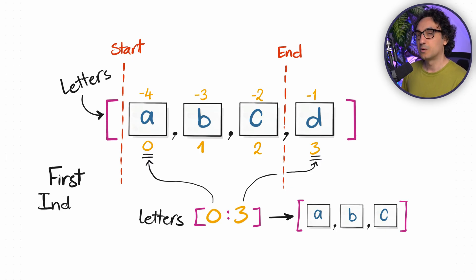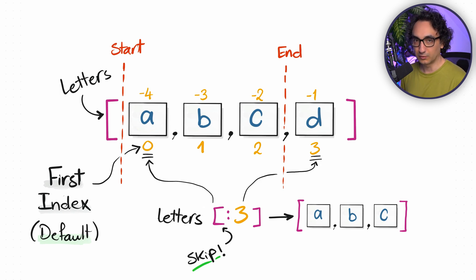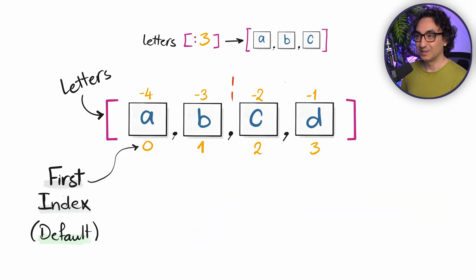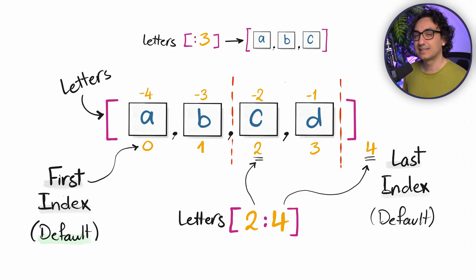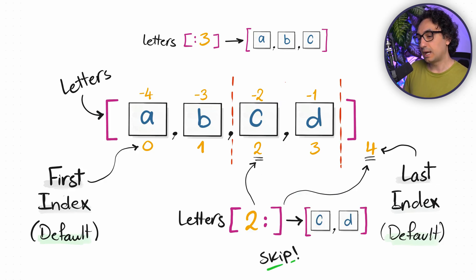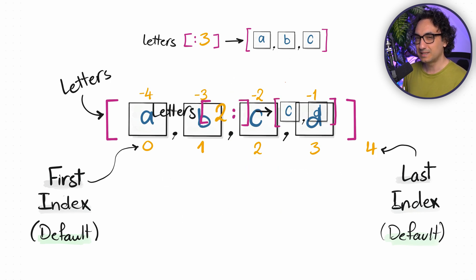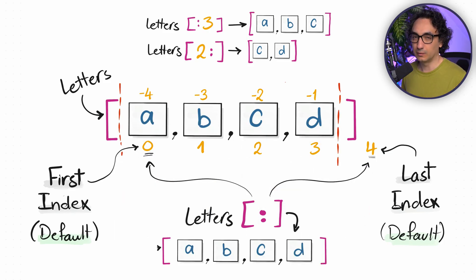There's something cool in Python: the starting index zero is actually a default. If you start slicing from the first item, you don't have to specify zero — skip it and start with the colon directly. Similarly, if you want c and d (starting at index two through the end), you write two colon and leave the end empty to get everything after. If you specify just a colon with nothing on either side, you get the whole list — though it's better to just use the variable name in that case.